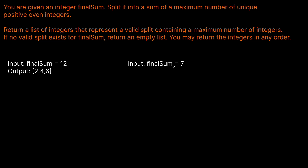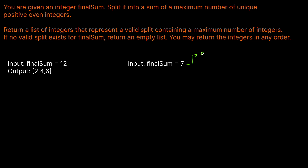Let's look at some basic examples. The first one is where final sum equals 7. Because 7 is an odd number, there's actually no way to split this into even numbers. We could do 2 and 5 — that doesn't work because 5 is odd. We could do 4 and 3 — but 3 is odd too. So whenever final sum is an odd number, we simply return an empty list because it's not possible.